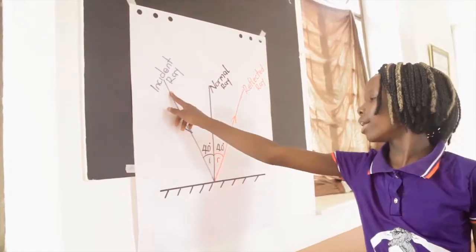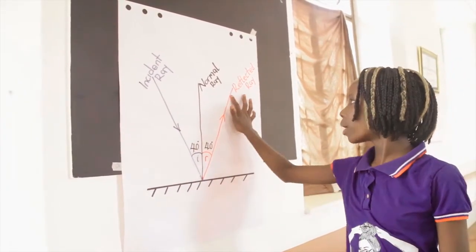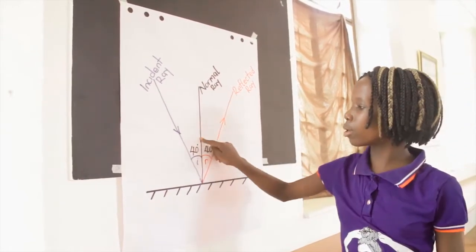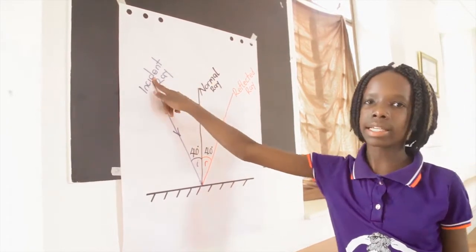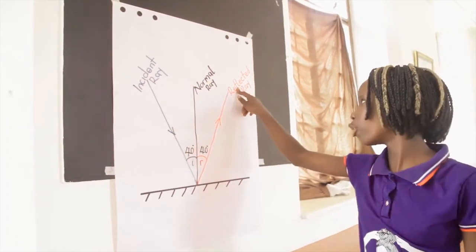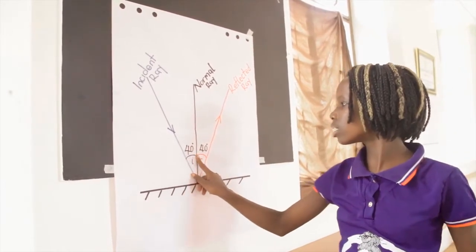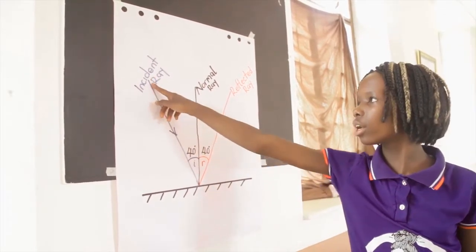The ray that hits the surface is the incident ray. The ray that bounces off is the reflected ray. The normal is perpendicular between the incident ray and the reflected ray. The angle of incidence is the angle between the normal and the incident ray.